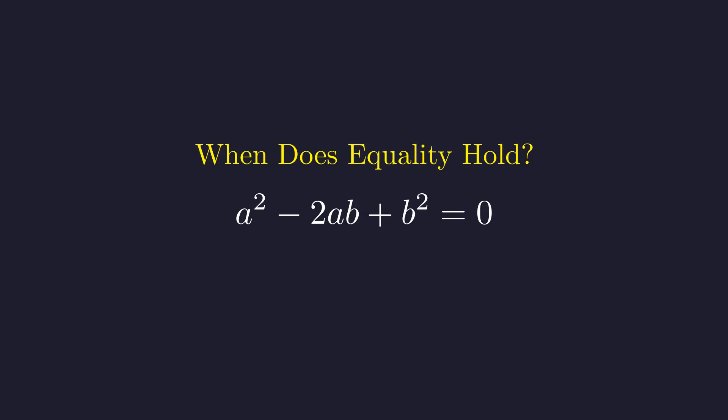This gives us a beautifully familiar quadratic structure. The left side is a perfect square trinomial, one of those elegant algebraic patterns that factors so nicely. It factors into A minus B, all squared.